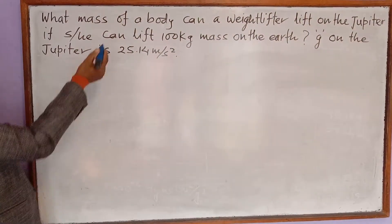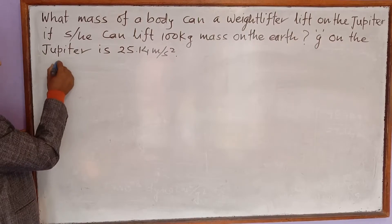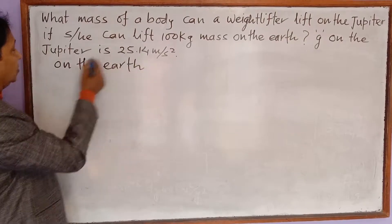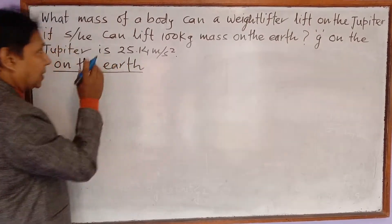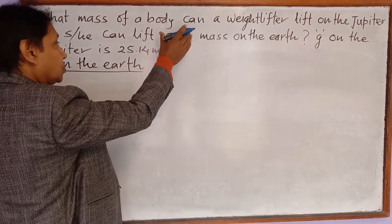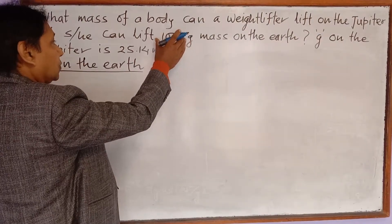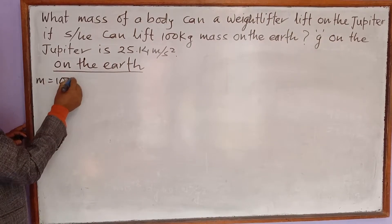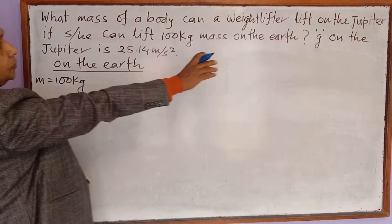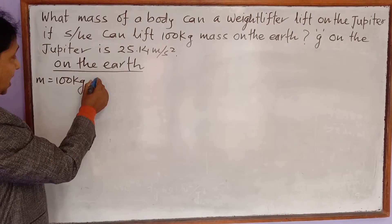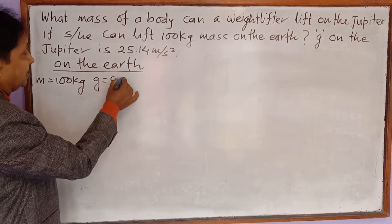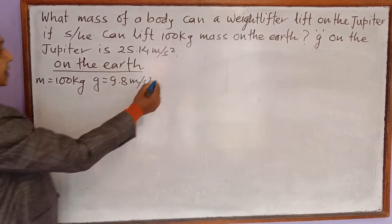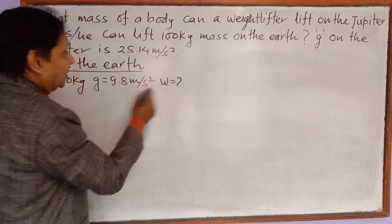Let's talk about the Earth first. I am going to find out how much force he can apply on the Earth — how much force he applied to lift a mass of 100 kg. The mass is given as 100 kg, and we know that g is 9.8 meters per second square.